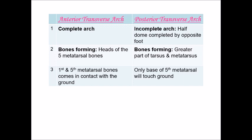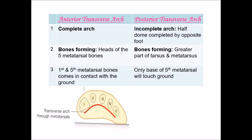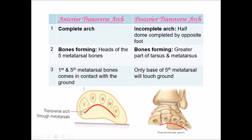Now the two transverse arches: anterior transverse arch and posterior transverse arch. The anterior transverse arch is a complete arch formed by the heads of the five metatarsals — only the first and fifth heads touch the ground, forming the pillars, while the second, third, and fourth are above ground. The posterior transverse arch is incomplete — only half the arch is formed; the lateral side touches the ground but the medial side is above. The complete arch is formed only when both feet are joined together.